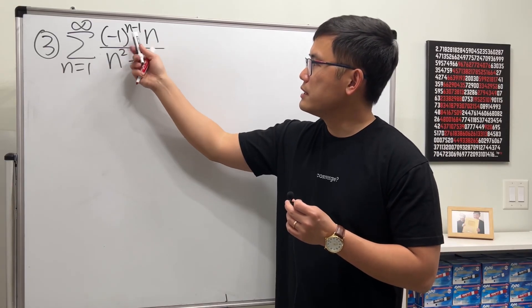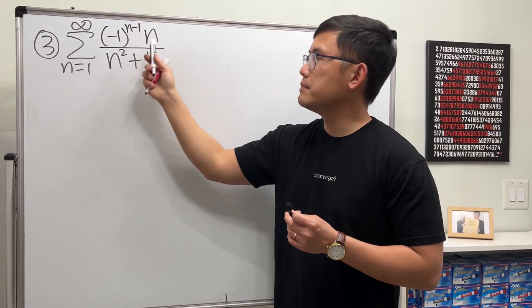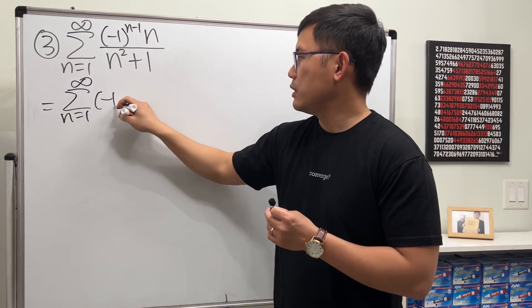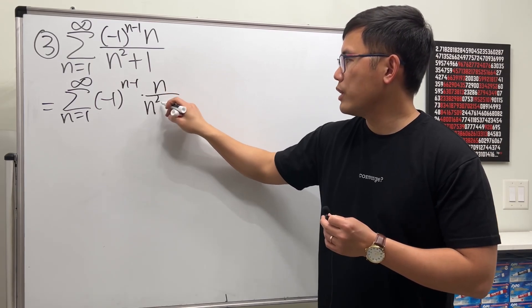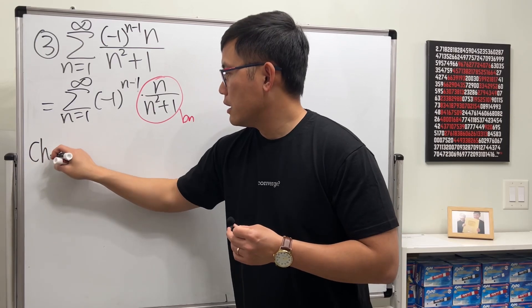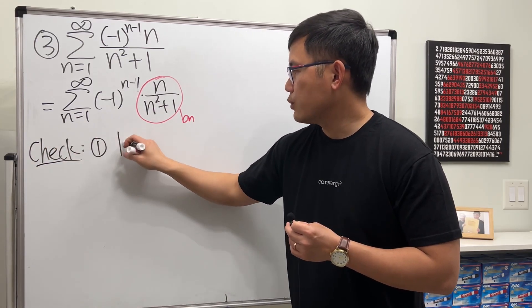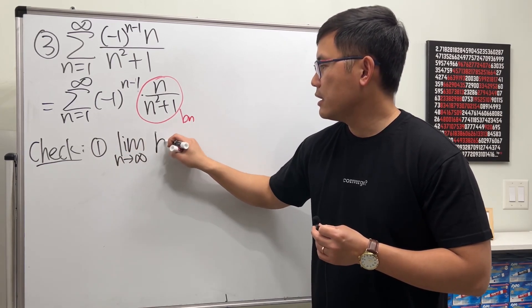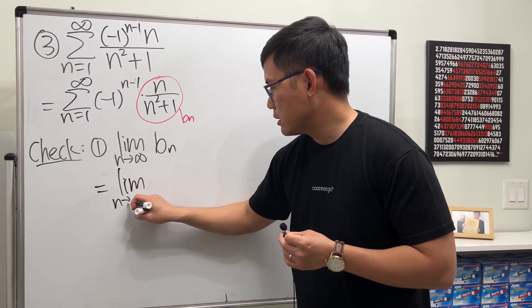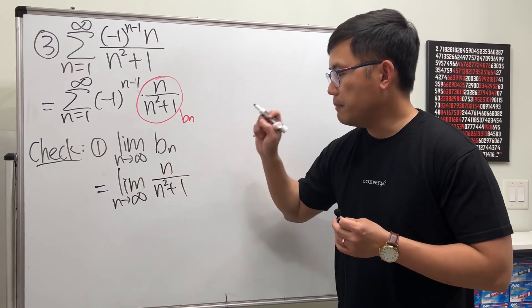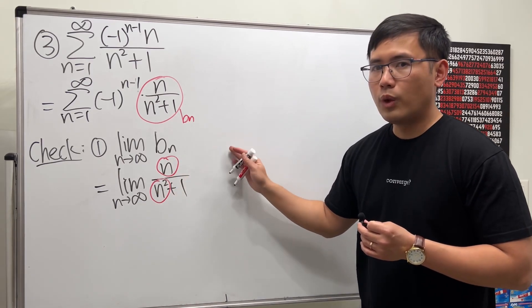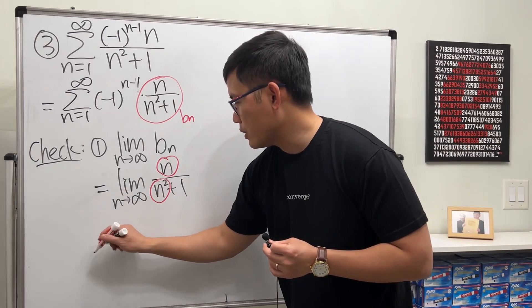Number 3: our series has a negative 1 to the n minus 1 part, so the rest — n over (n squared plus 1) — is the bn. The first check: the limit as n goes to infinity of n over (n squared plus 1). As n goes to infinity, we compare n with n squared, so n over n squared reduces to 1 over n. As n goes to infinity, we get 0. Check.